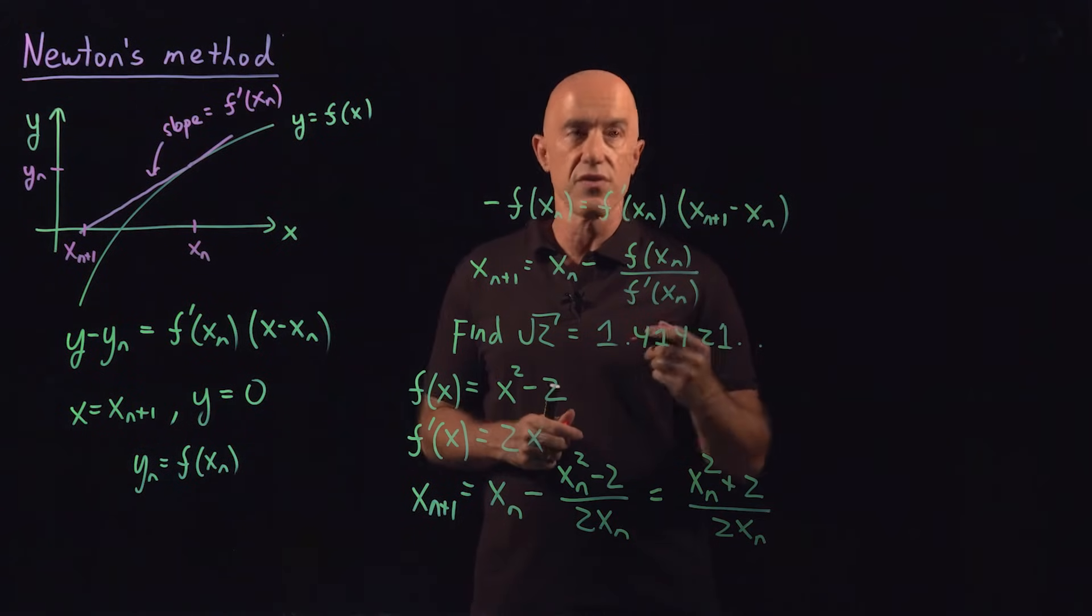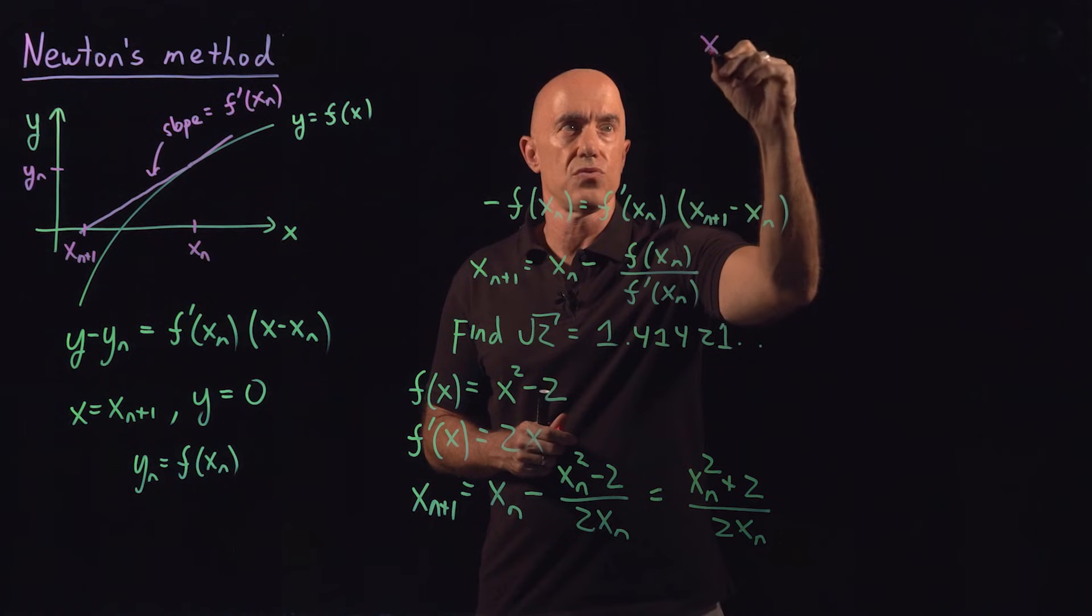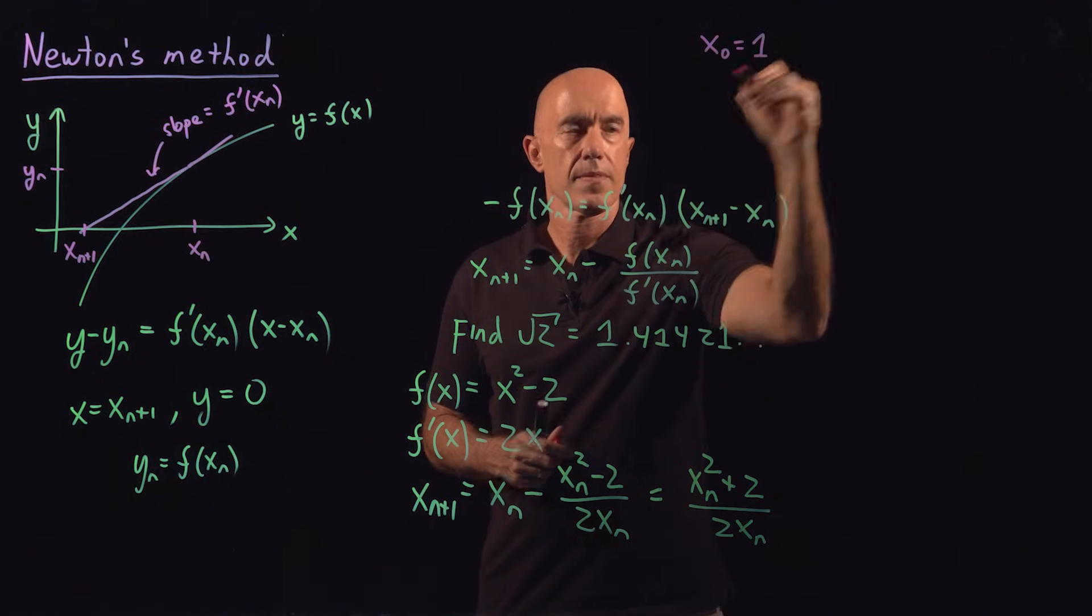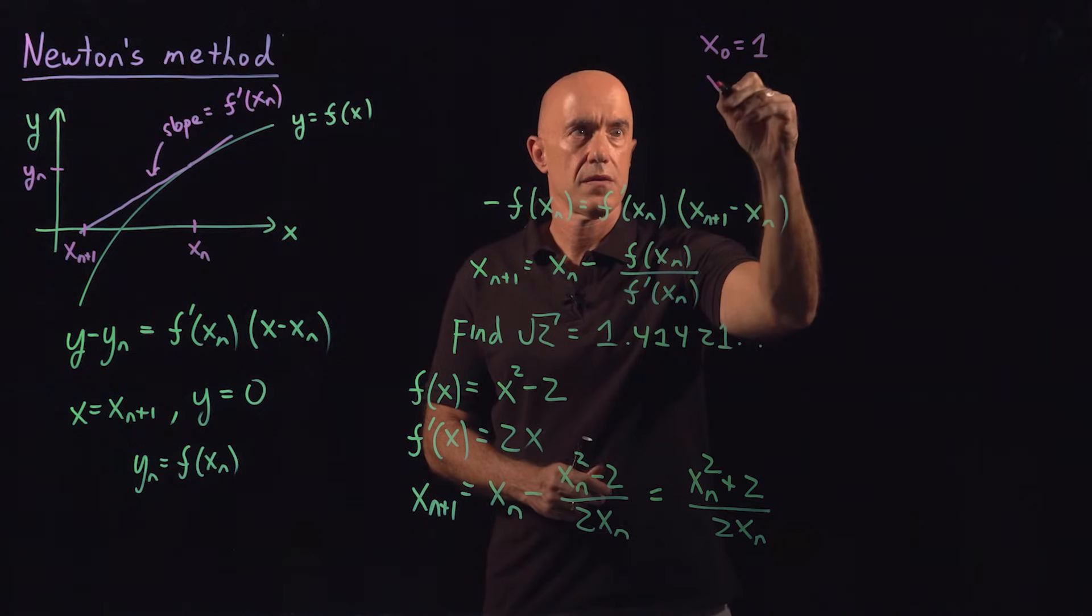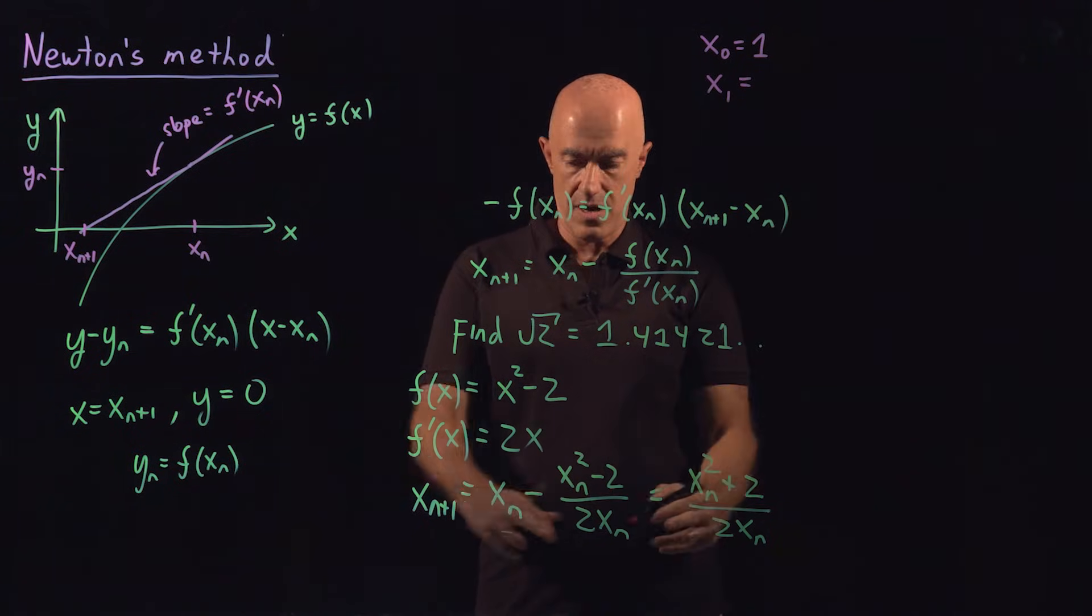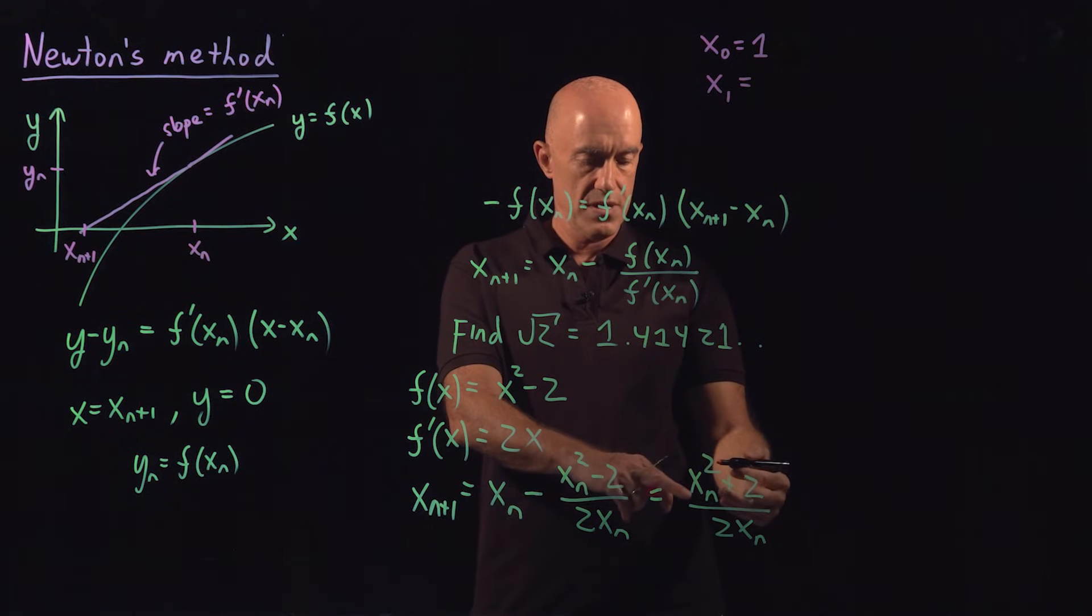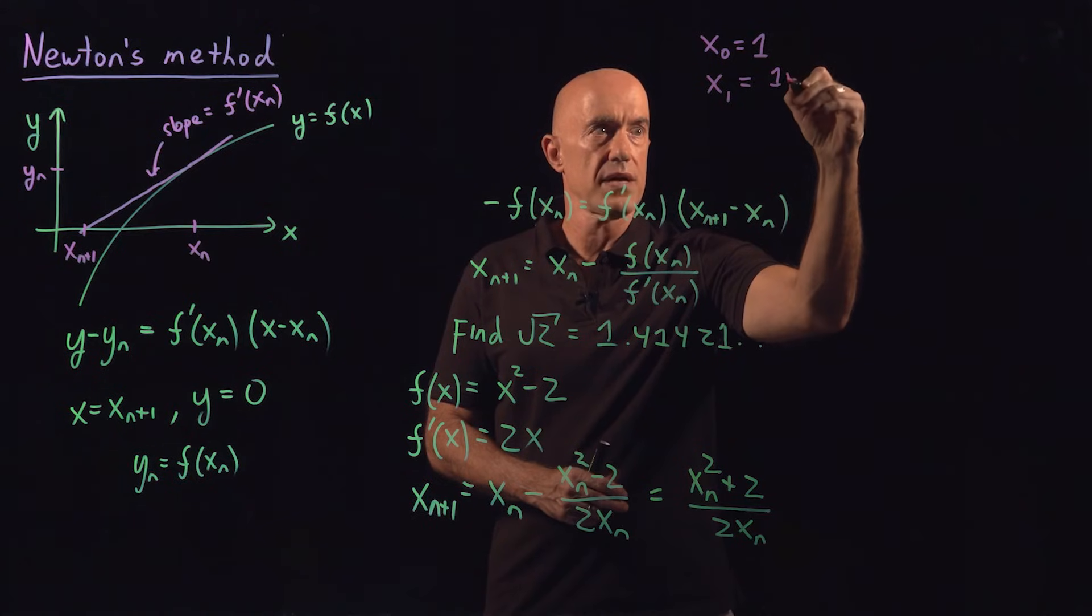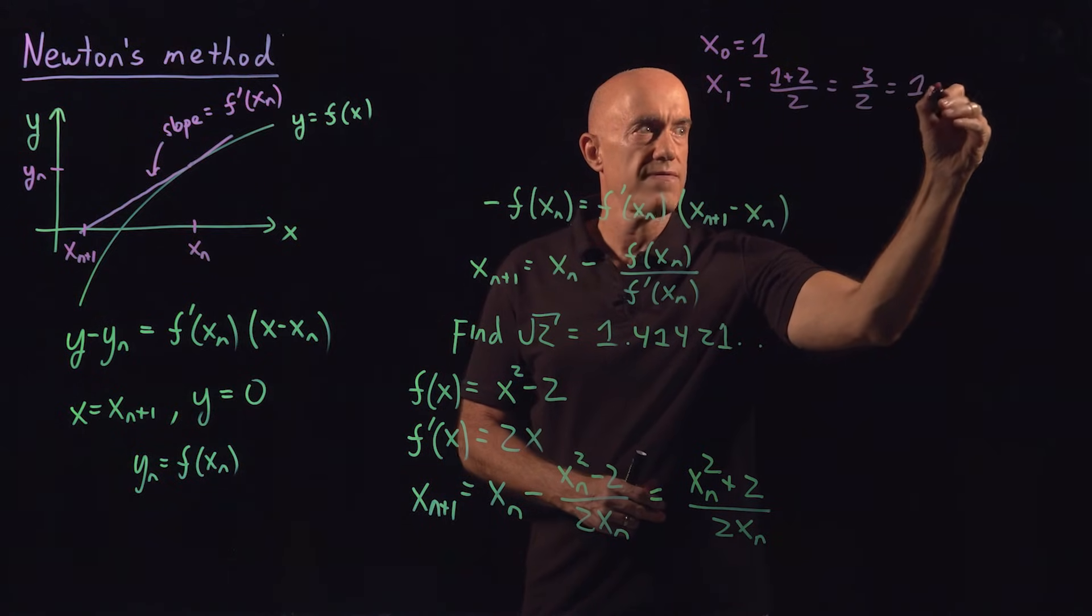So let's try this. We can choose a value of x_0. Let's take x_0 equal to 1. Then our value of x_1 from our formula here would be 1 plus 2, which is 3 divided by 2. So 1 plus 2 over 2 is 3 halves, which is 1.5.